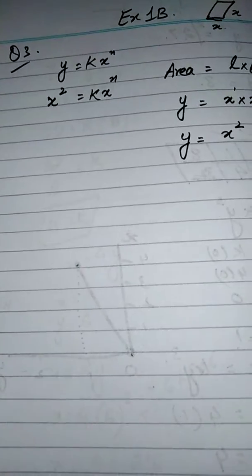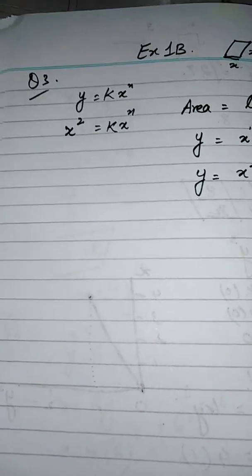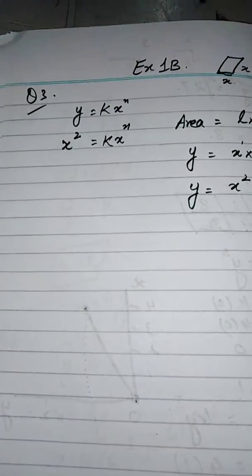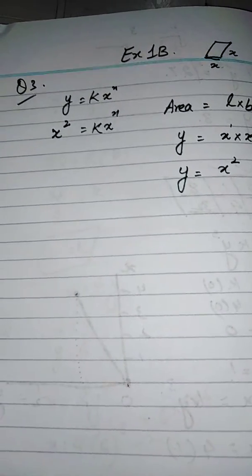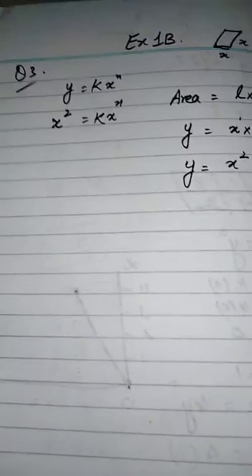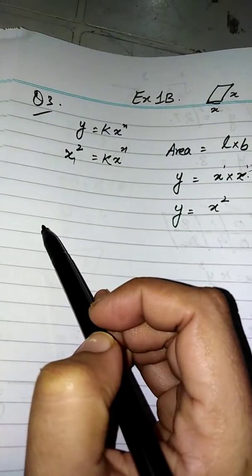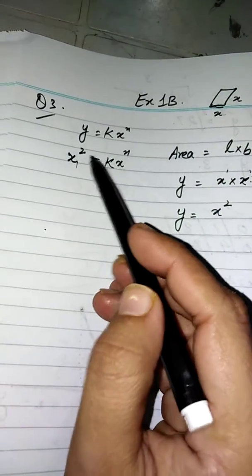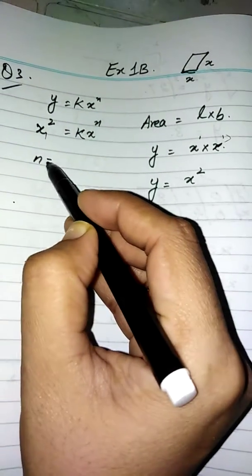Now apply the rule: whenever you have the same variables on both sides of an equation, their powers are equal. Here we have x on both sides. The power on the left is 2 and the power on the right is n, so n is equal to 2.